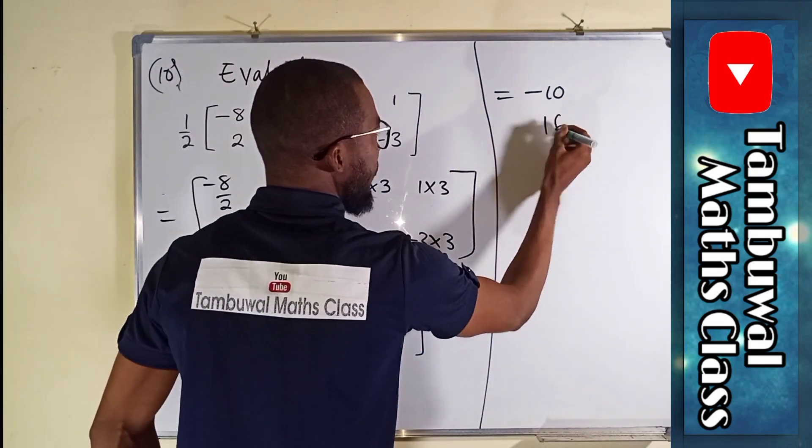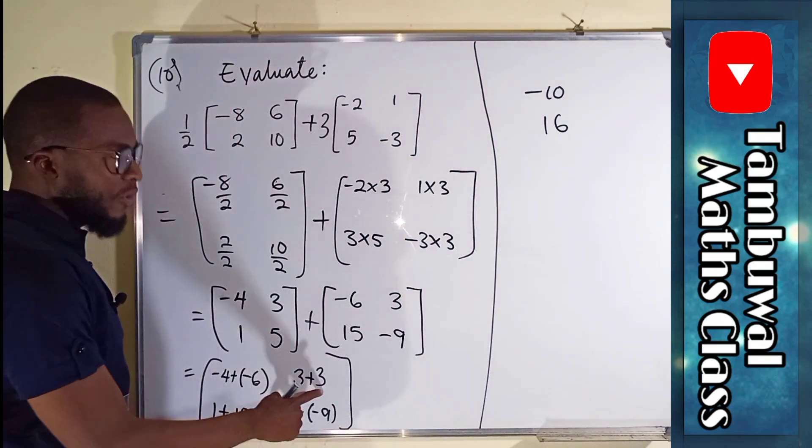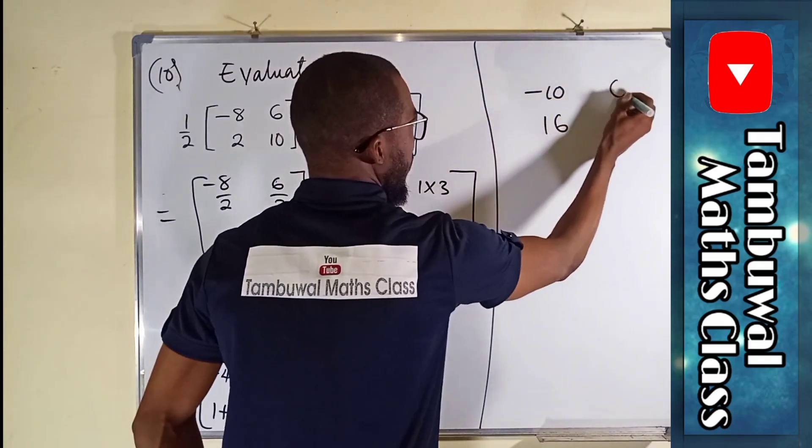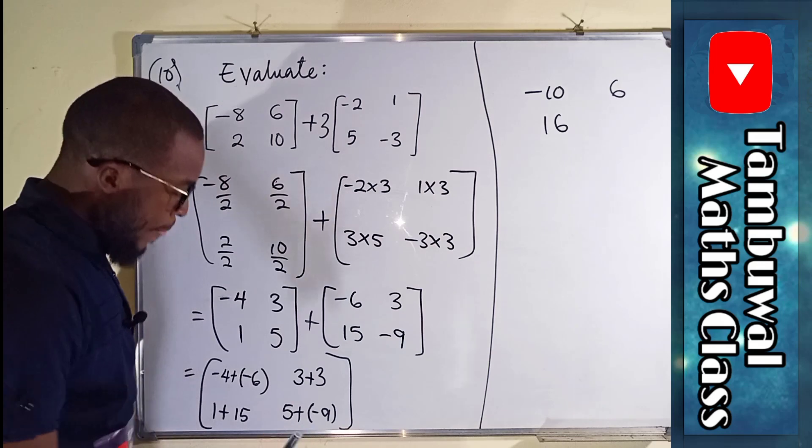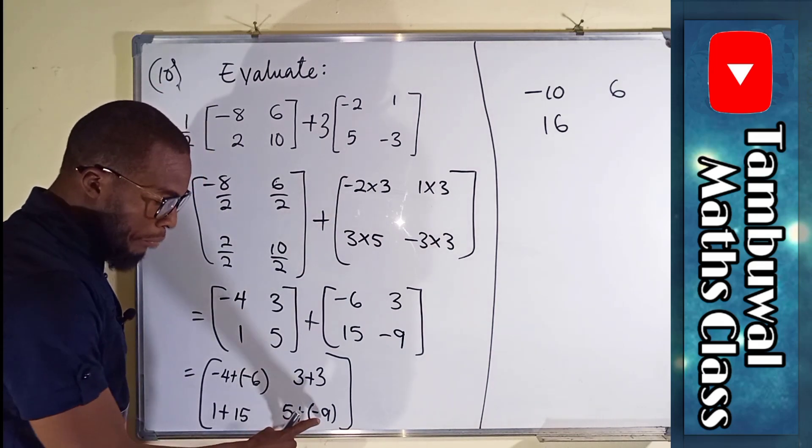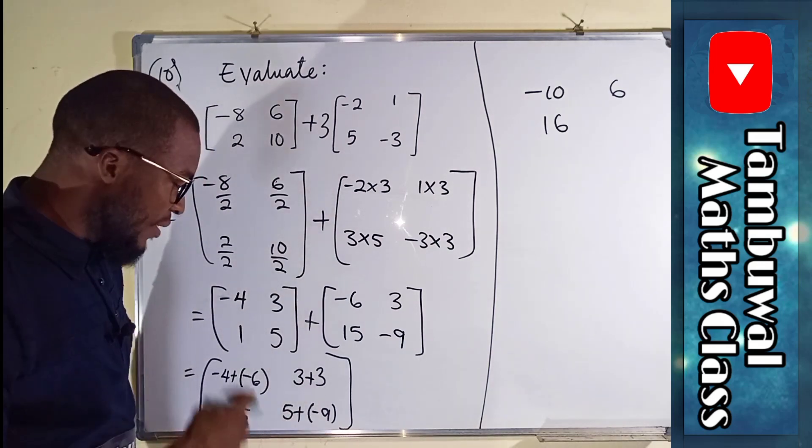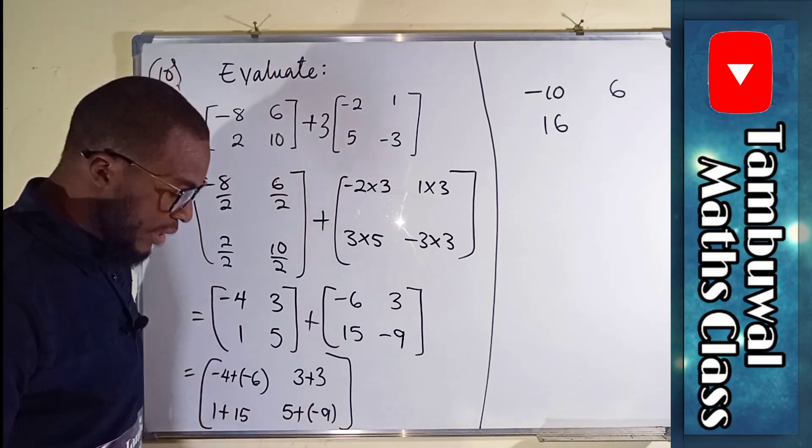3 plus 3 is 6. 5 plus minus 9 is the same thing as saying 5 minus 9 which is negative 4.